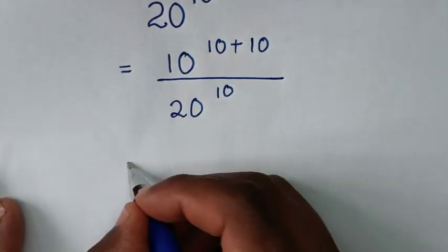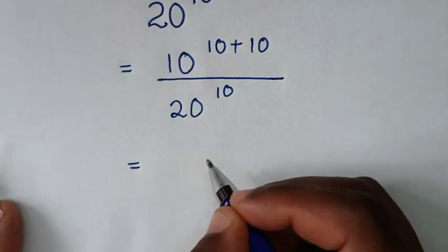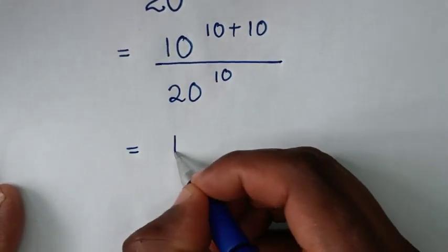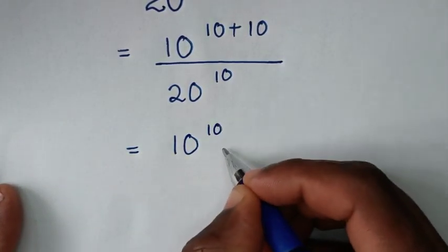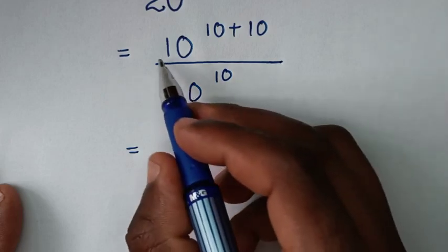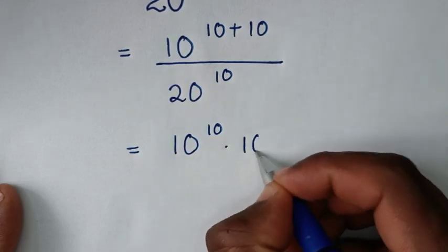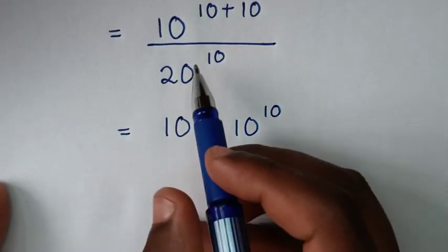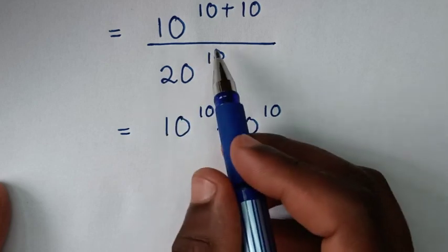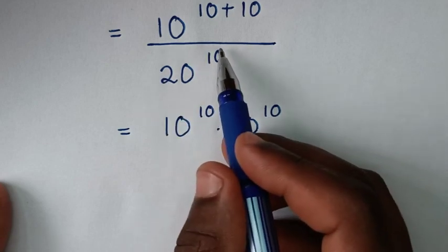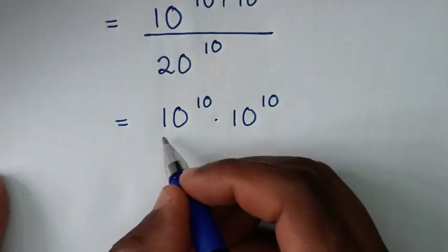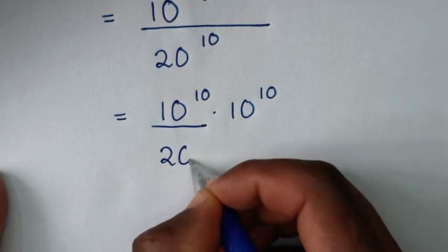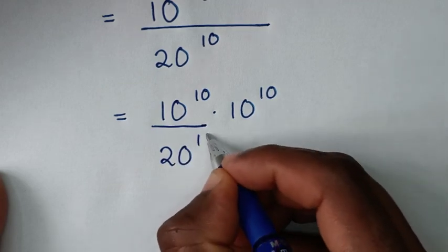Then it will be equal to: 10 power of 10 plus 10 is the same as 10 power of 10 times 10 power of 10. Then over 20 power of 10 — we'll divide into this part, so here it will be over 20 power of 10.